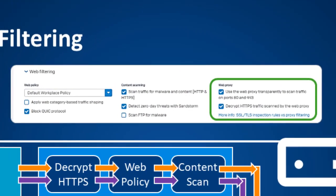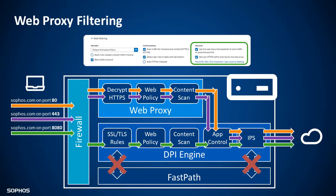If you enable the web proxy, then HTTP and HTTPS traffic on ports 80 and 443 will be processed by the legacy web proxy for decryption, web policy, and content scanning before being handed to the DPI engine for application control and IPS. HTTP or HTTPS traffic on other ports will still be handled by the DPI engine.